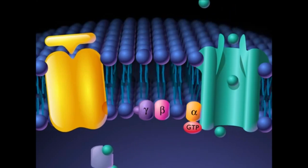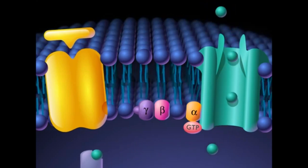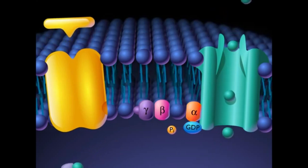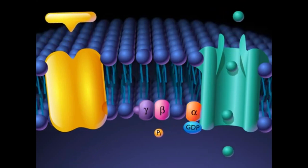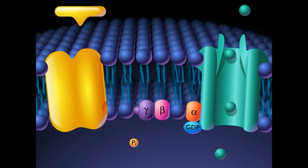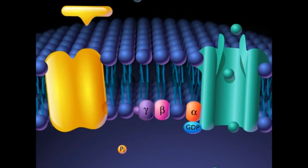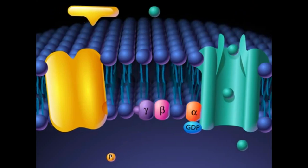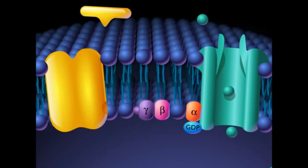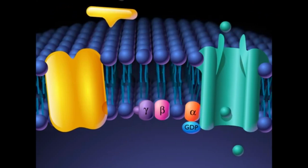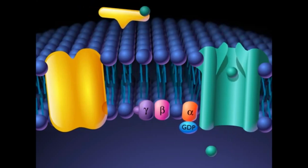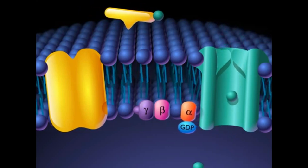Phosphorylase activity removes a phosphate from the guanosine triphosphate, leaving guanosine diphosphate bound to the alpha subunit. The inactivated alpha subunit separates from the calcium ion channel, and the channel closes.